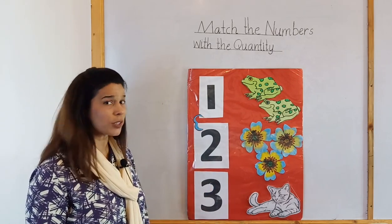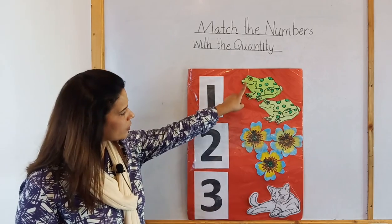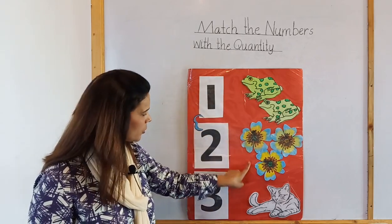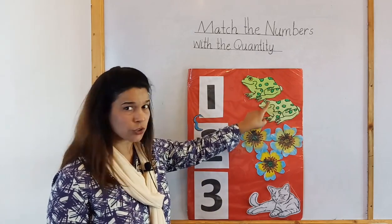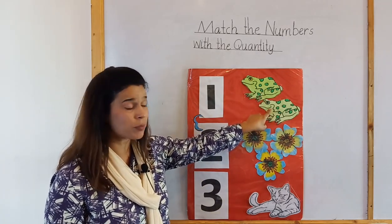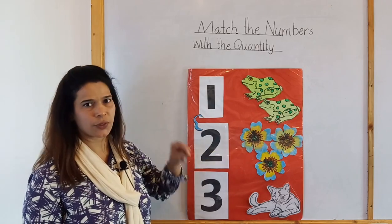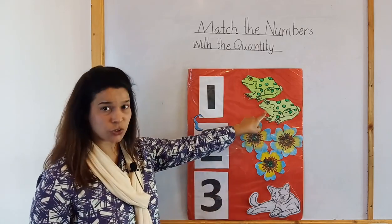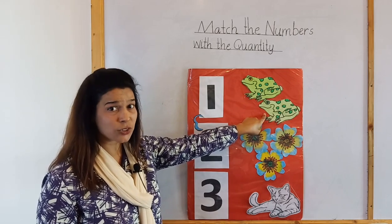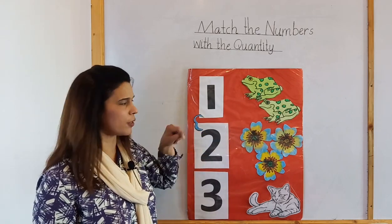So today what we will do, we have the quantity of numbers over here. We will count the pictures and we will match them with the number. Have you understood? We will count the picture and we will match it with the related number.